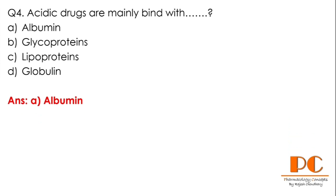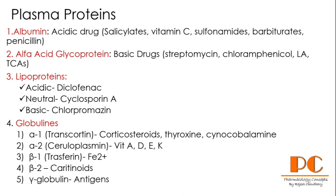Plasma proteins are mainly four types: albumin, alpha-acid glycoprotein, lipoprotein, and globulins. Acidic drugs bind with albumin — examples include salicylate, vitamin C, sulfonamides, barbiturates, and penicillins. Basic drugs mainly bind with alpha-acid glycoprotein — examples include erythromycin, chloramphenicol, local anesthetics, and tricyclic antidepressants. Lipoproteins can bind acidic, neutral, and basic drugs.